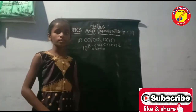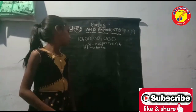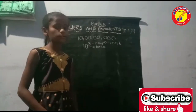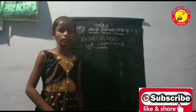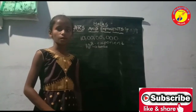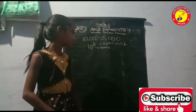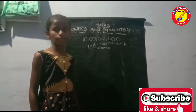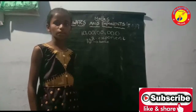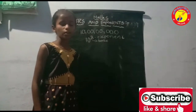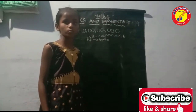Now, exponents with other bases. In the previous example, we took 10 as the base. Now we will see some more other bases. For example, 81 is there. How can we convert 81 into exponential form?